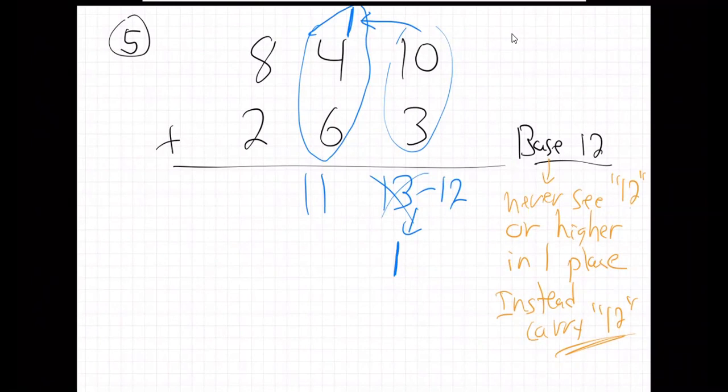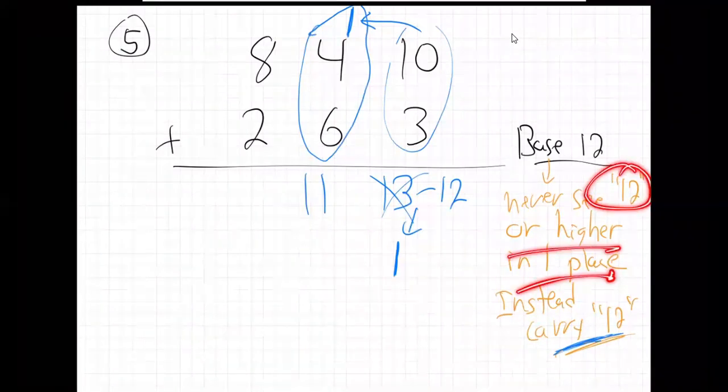Why not? Because you only carry with 12 in base 12, right? See what the rule says over here? You're never going to see a 12 or higher in one place, but you can have 11. That's okay.